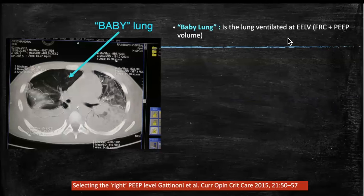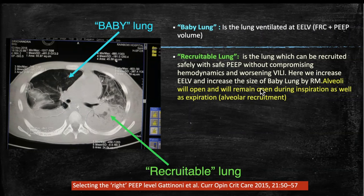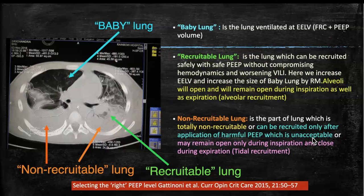In ARDS, we have a baby lung — ventilated at end-expiratory lung volume (FRC plus PEEP volume) — recruitable lung that can be safely opened without compromising hemodynamics, and non-recruitable lung where alveoli cannot be opened at acceptable pressures. Good alveolar recruitment means alveoli open and remain open during both inspiration and expiration, improving compliance, CO2 elimination, and oxygenation. Excess PEEP leads to excessive end-inspiratory lung volume approaching total lung capacity.